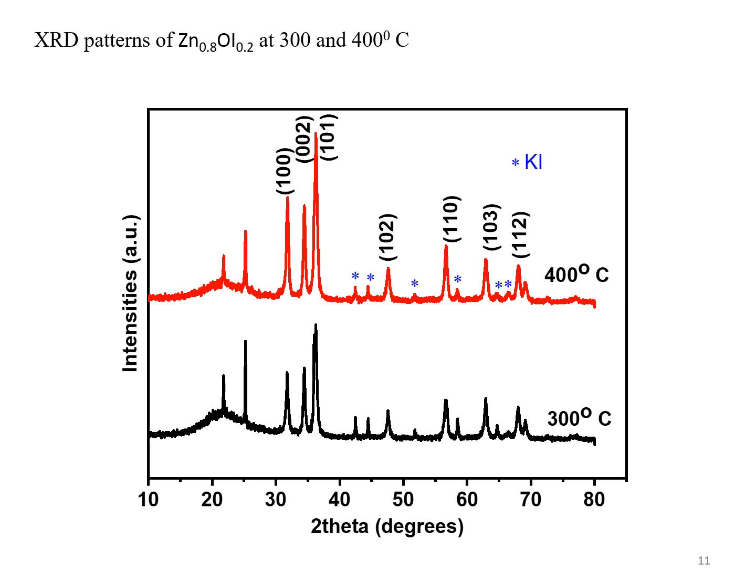There exist extra peaks which could be related to the residual potassium iodide used in preparation. The intensities of 100, 002, and 101 planes are clearly changed with increasing calcination temperature.